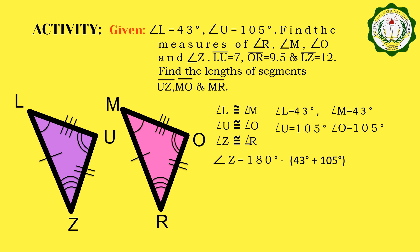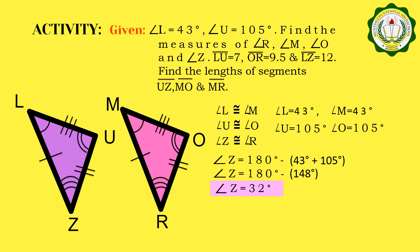Those are the measures of angle L and angle U respectively. So, angle C is equal to 180 degrees minus 148 degrees, which gives us angle C equal to 32 degrees. And since angle C is congruent to angle R, and angle C is 32 degrees, therefore angle R is also equal to 32 degrees.